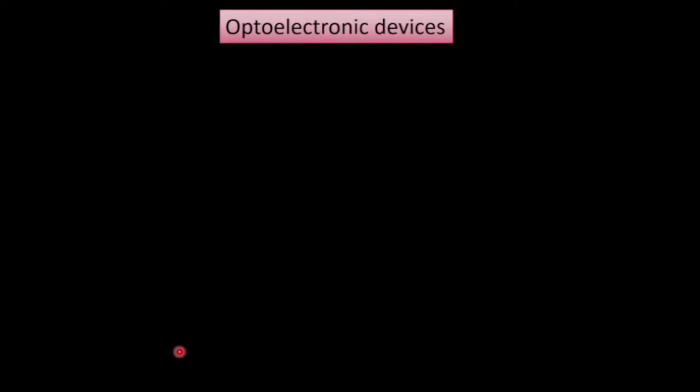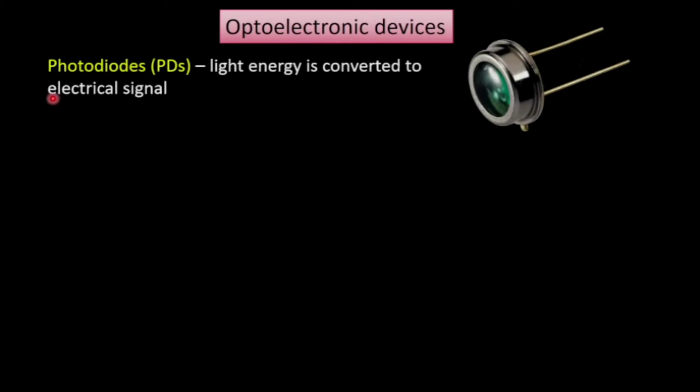There are different types of optoelectronic devices. From your syllabus, we will discuss some of them. First is the photodiode — this is basically a diode which converts light energy into electrical energy, and since it is a diode, it is a two-terminal device.